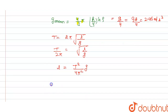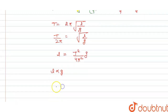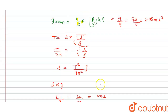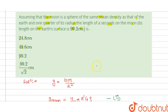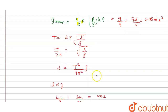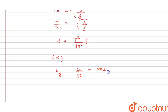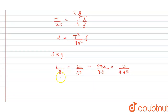Therefore l is directly proportional to g, so l1 divided by g1 equals l2 divided by g2. Substituting: l1 is 99.2 cm, g1 is 9.8, and g2 is 2.45. So l2 equals 99.2 multiplied by 2.45 divided by 9.8.